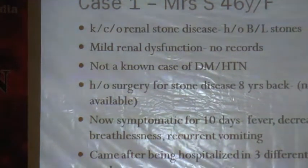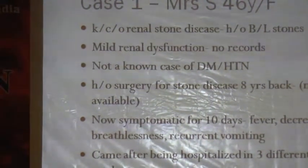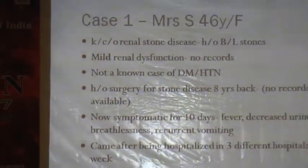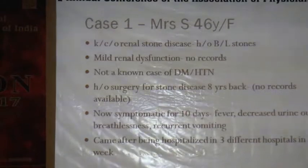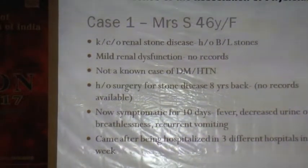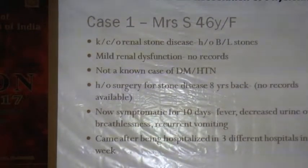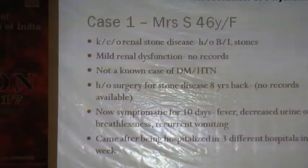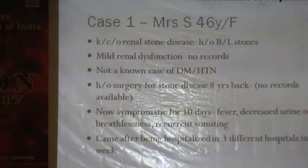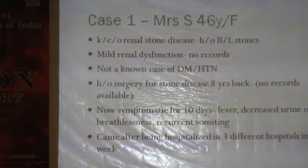The first patient is a 46-year-old lady, a known case of renal calculus disease with history of bilateral calculi. She had mild renal dysfunction but has no records. I see her for the very first time in an emergency — she has eight years of disease history but not a single report with her. She comes symptomatic for 10 days with fever, decreased urine output, breathlessness, and recurrent vomiting. She had already visited three separate hospitals before coming to me.